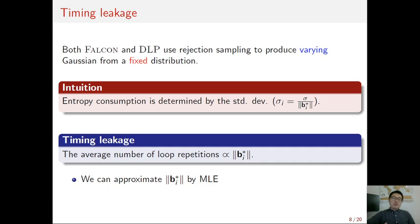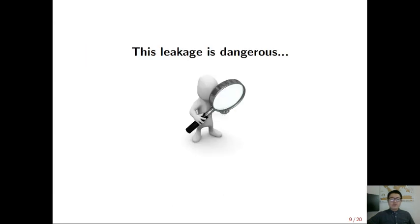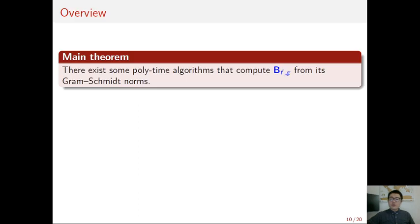So, from a timing channel, we can measure the number of loop repetitions during each signing. This allows us to approximate the Gram-Schmidt norm by maximum likelihood estimate from sufficiently many signatures. So, we call this side-channel leakage Gram-Schmidt norm leakage. Indeed, the Gram-Schmidt norm leakage is dangerous. We show that there is a polynomial time algorithm that can recover the NTRU key from the Gram-Schmidt norm of the NTRU basis.